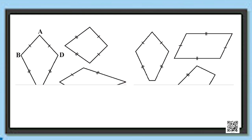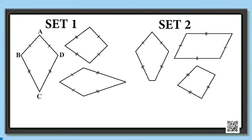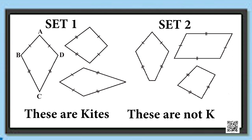Let us observe these two given sets of quadrilaterals and find which amongst them is a set of kites. Set 1 is a collection of kites, whereas set 2 is not a collection of kites as they do not have one pair of adjacent sides which are equal.